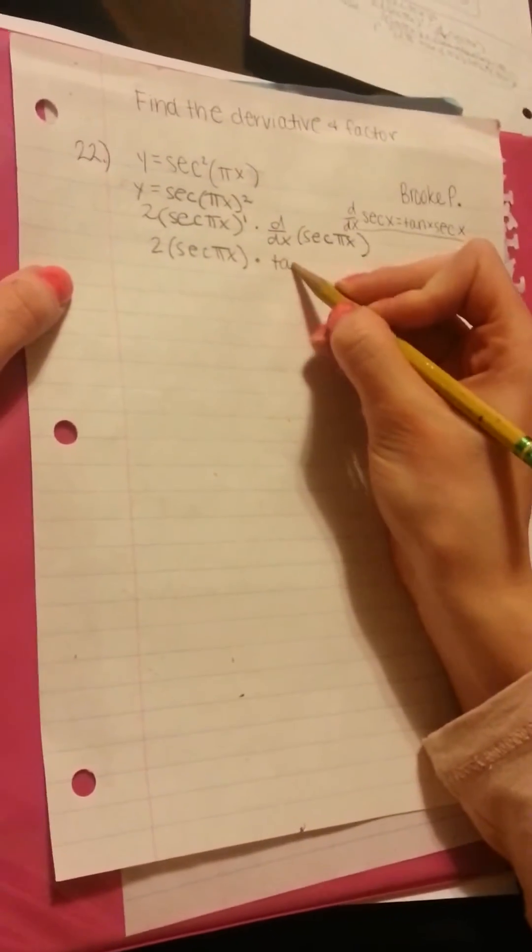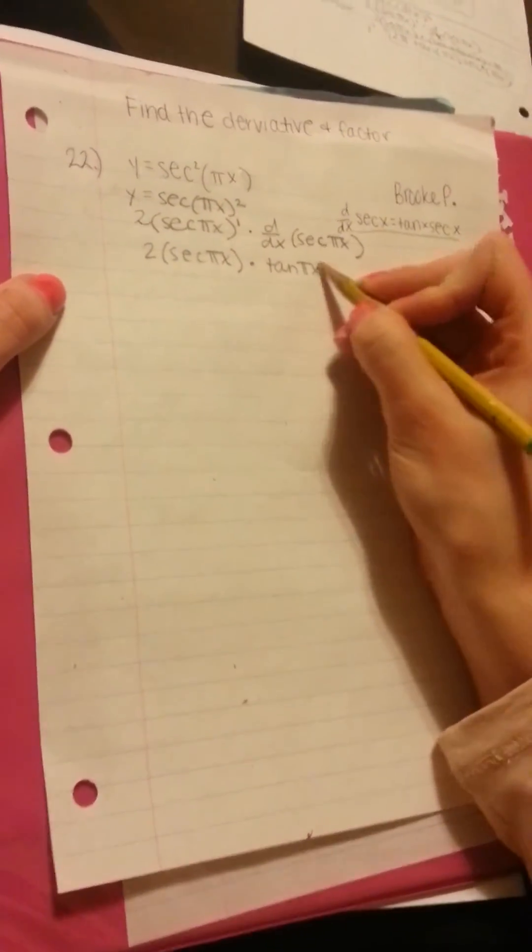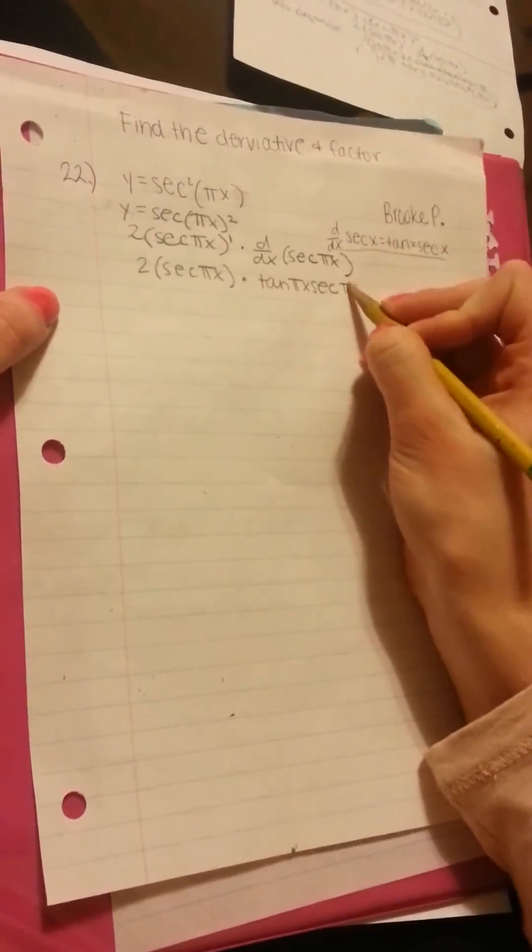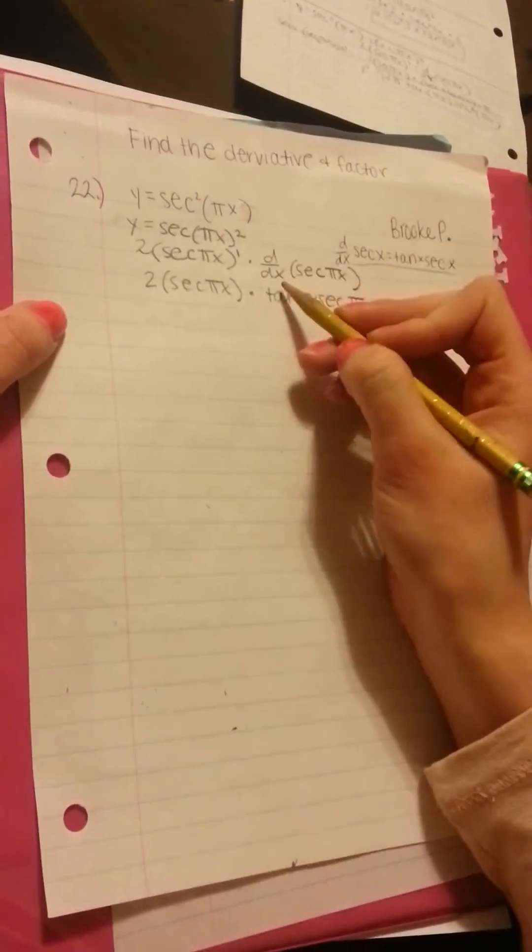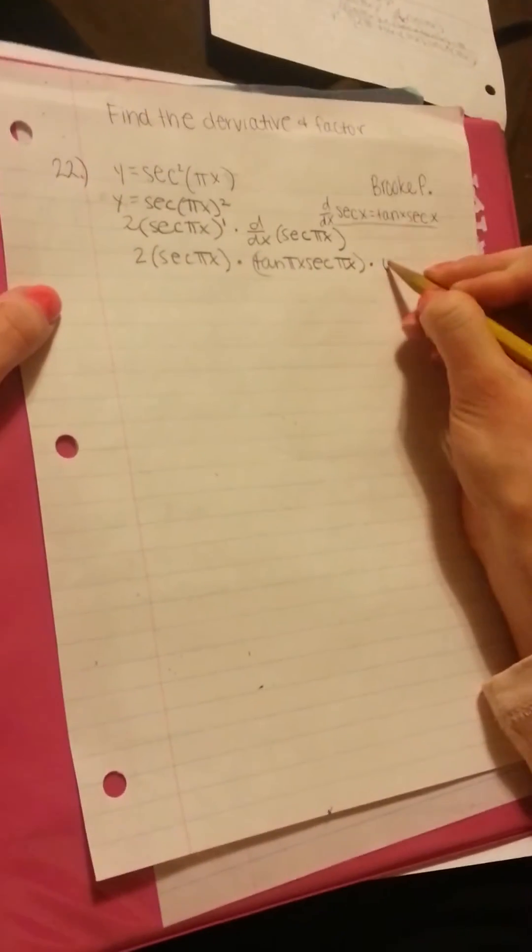And then the derivative of secant pi x I have written here is tangent pi x times secant pi x. And then since pi is a constant, we're going to have to pull that out.